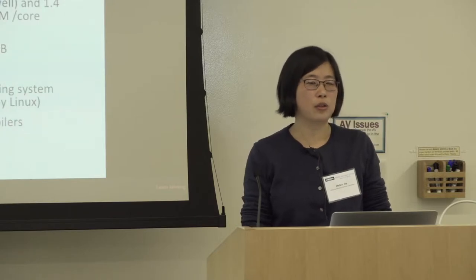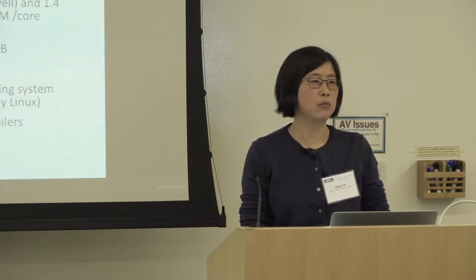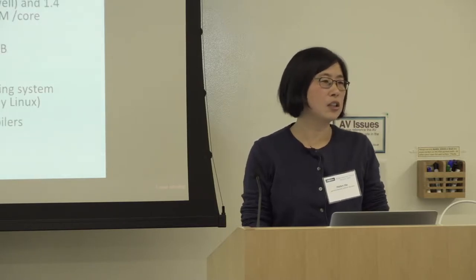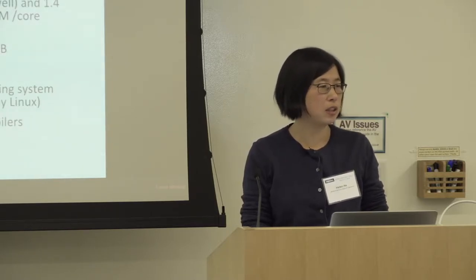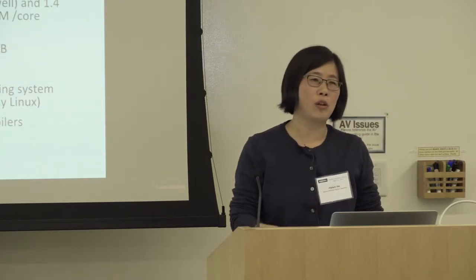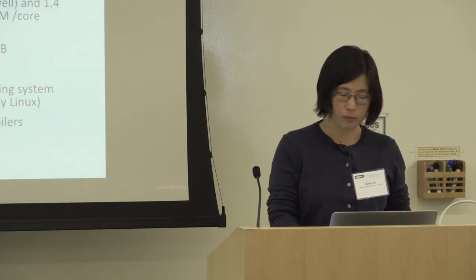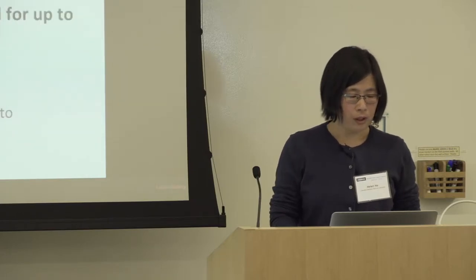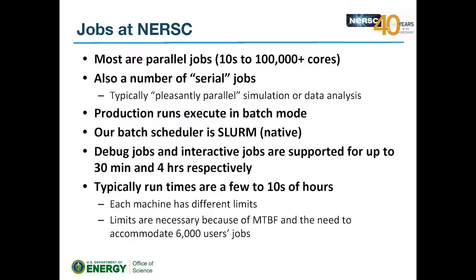If you want to use a smaller number of MPI tasks on KNL, you can get more memory per task. It's encouraged to use OpenMP, so that not only do you get better scaling, but you're also managing your memory usage. I'll touch on the actual core layout, hyper-threads, and so on in a couple of slides.